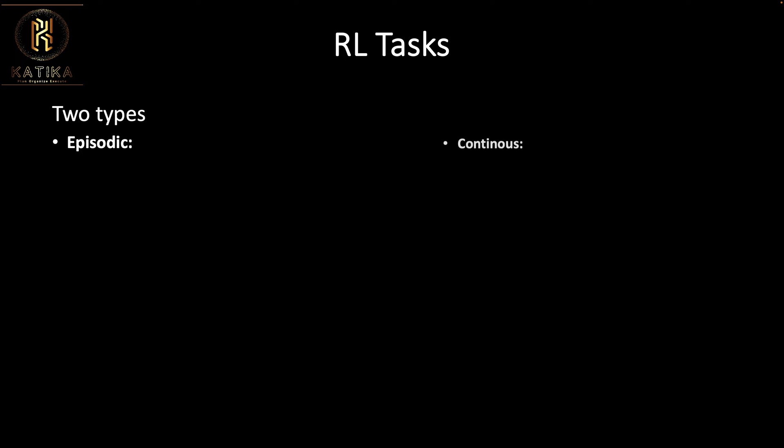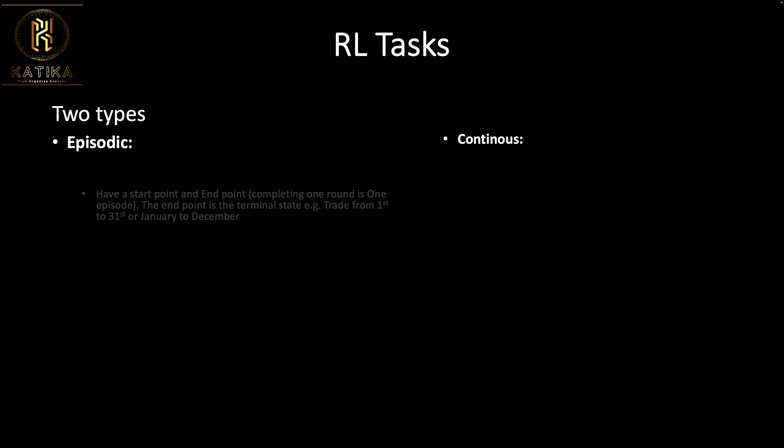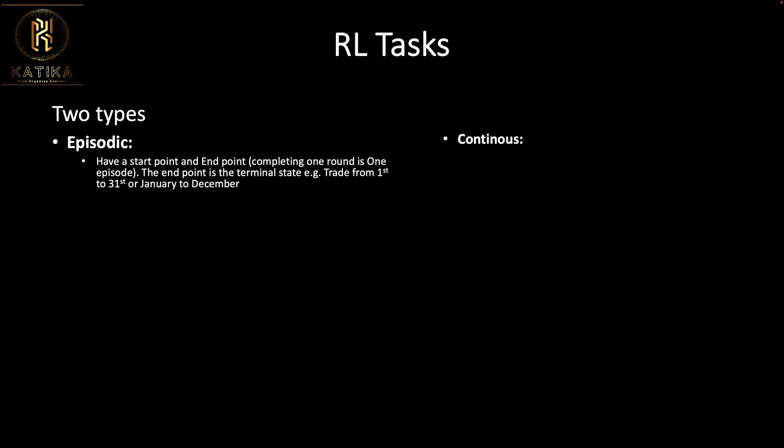A task can be episodic or continuous. An episodic task is like watching a TV series — one episode ends and another starts. It has a start and an end. So a task that has a start point and an end point is an episodic task. In terms of trading, if you trade and record your performance on a monthly basis — from the 1st to the 31st — that is an episodic task.